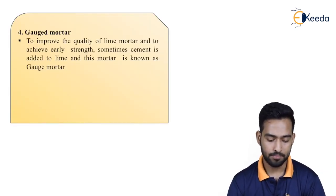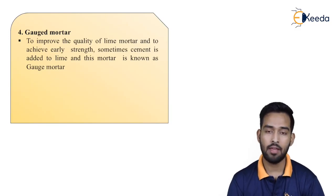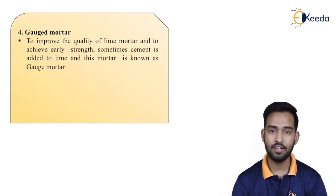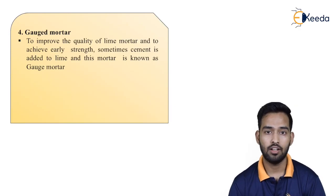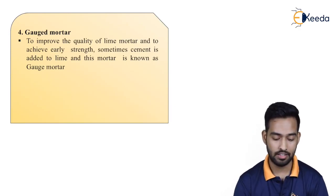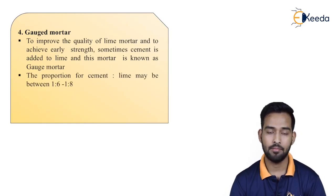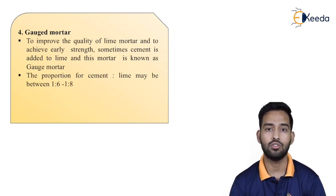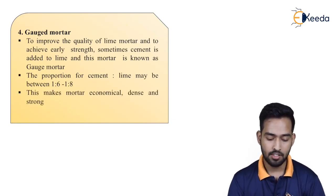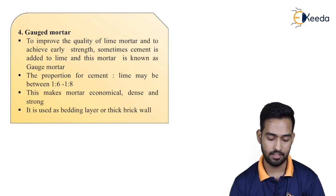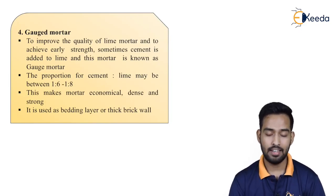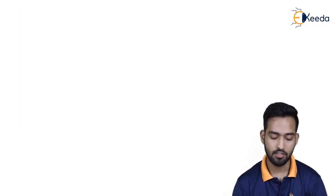Next comes gauge mortar. To improve the quality of lime mortar and achieve high strength, cement is added to lime. This mortar is known as gauge mortar, and is also called cement lime mortar. The proportion for cement to lime may be in between 1:8 to 1:6. This makes the mortar economically dense and strong. It is used as a binding layer or bedding layer for thick brick walls.